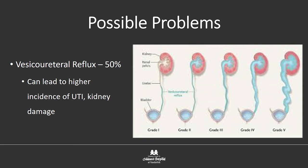Recurrent urinary tract infections are going to be your signal that something may be wrong with the kidney. If you've never had a problem and you've never had a kidney x-ray and you get a UTI, it's possible to find an anomaly at that point. But if you've had a normal x-ray in the past, it's probably not going to come out of the blue.